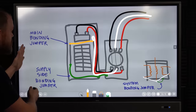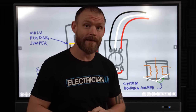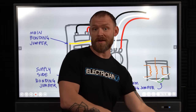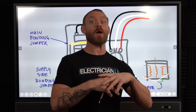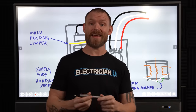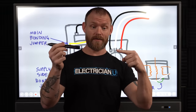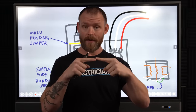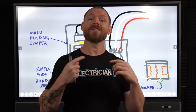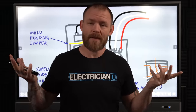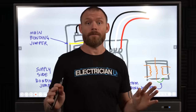Now we have bonding jumpers, which are a whole different thing. Bonding is not grounding. Bonding is not grounded. Bonding just means taking one metal thing and another metal thing and jumping them together — connecting them so they become one continuous, bigger piece of metal. That's a bonding jumper.